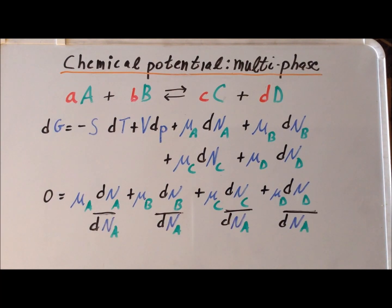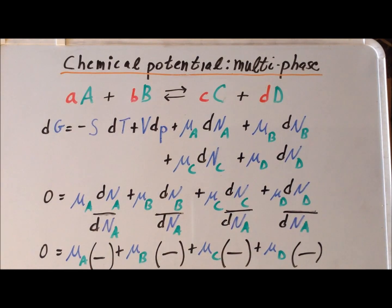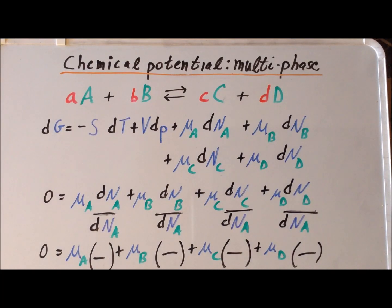Next, we are going to divide through by dn_A. So we simply divide each of the four terms by dn_A. And since we have an open system, we know that dn_A is not identically zero. Next, we are going to evaluate each of these fractions, and we are able to evaluate them since we have the overall stoichiometry of the reaction. Even without the stoichiometry, dn_A divided by dn_A, simply from the rules of calculus, we know is going to be equal to one.